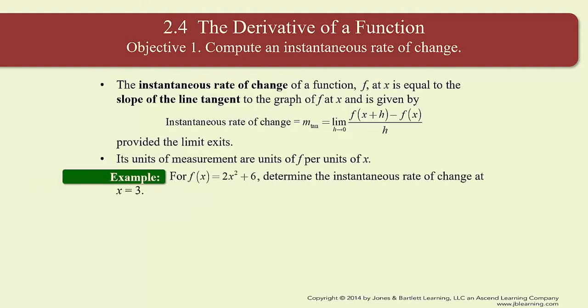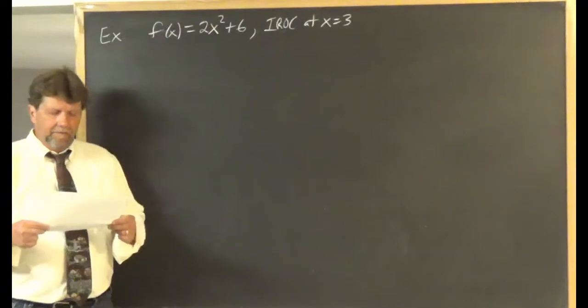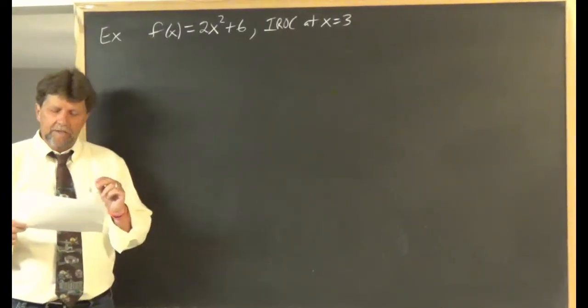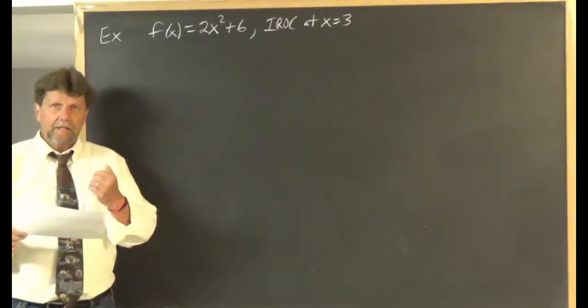Let's do a friendly first example. For the function f of x equals 2x squared plus 6, let's determine the instantaneous rate of change at x equals 3. Make sure you have this written down, and we're going to determine exactly the instantaneous rate of change of this function at x equals 3.